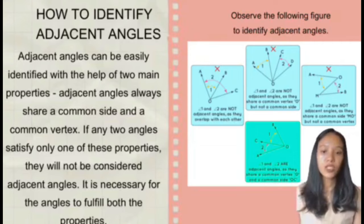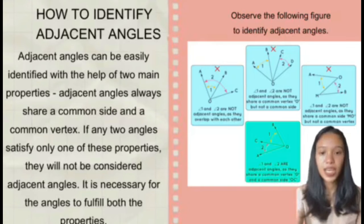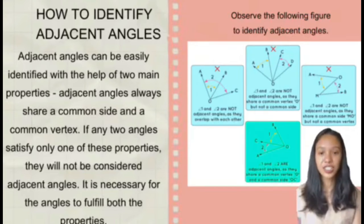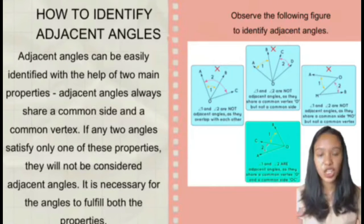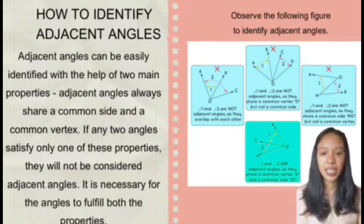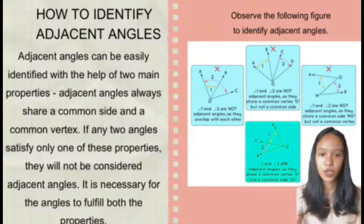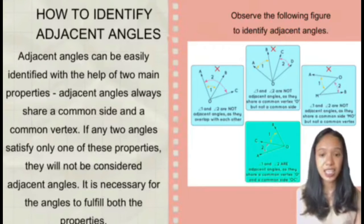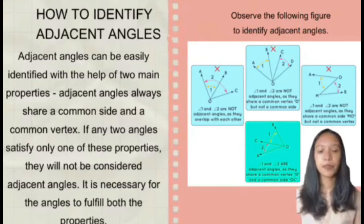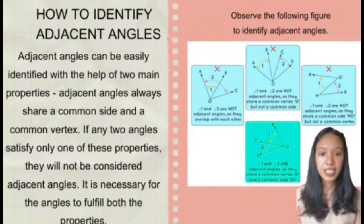Observe the following figures to identify adjacent angles. In figure one, angle 2 and angle 1 are not adjacent angles as they overlap with each other — angle one is angle AOB and angle two is AOC. In the next figure, angle 1 and angle 2 are not adjacent angles because, although they share a common vertex O, they are not next to each other.